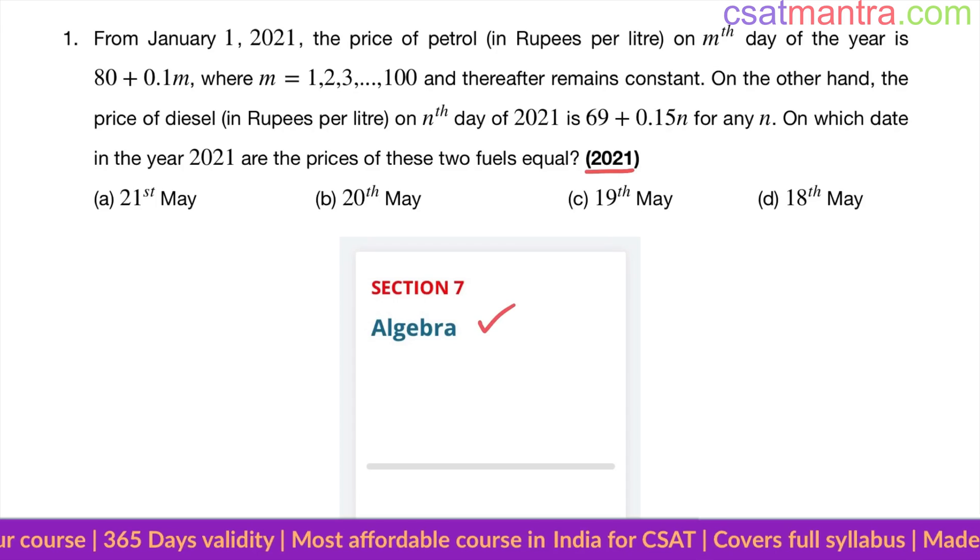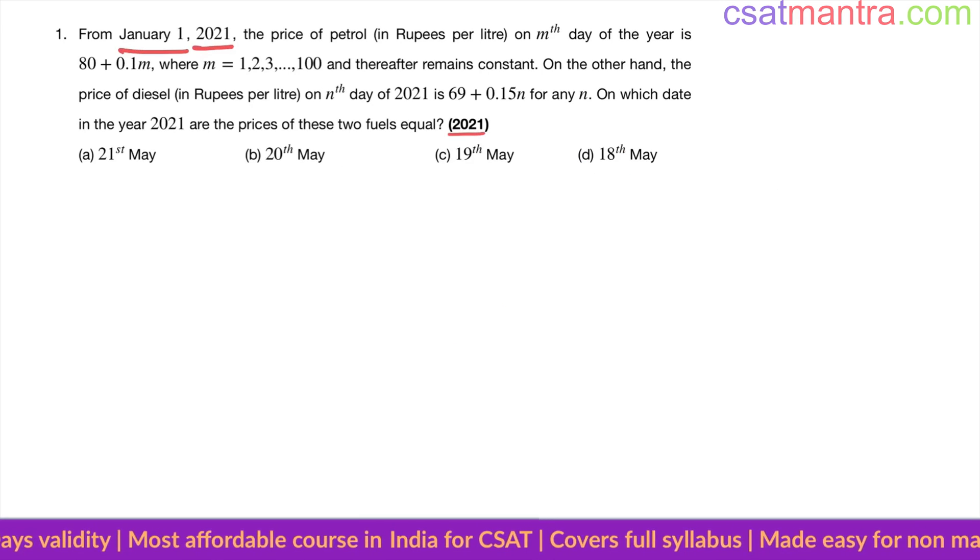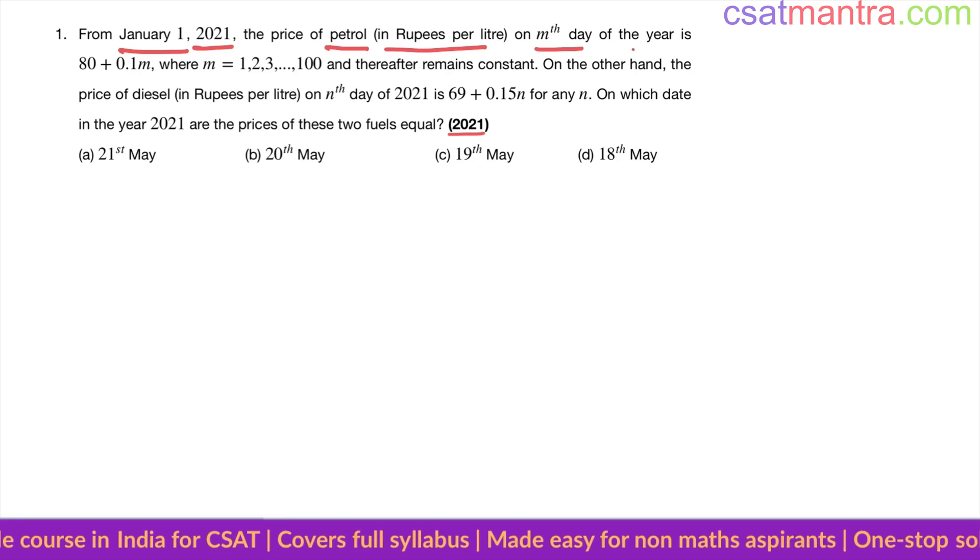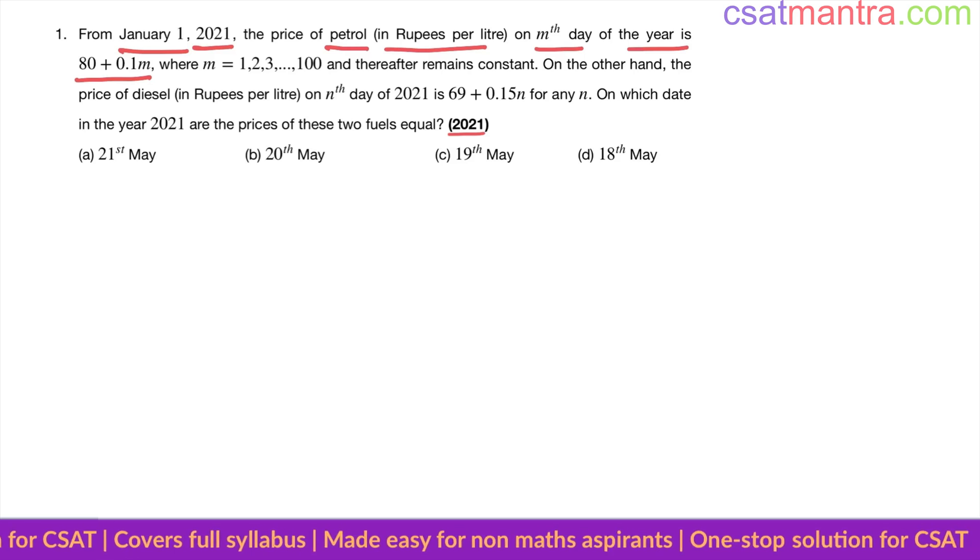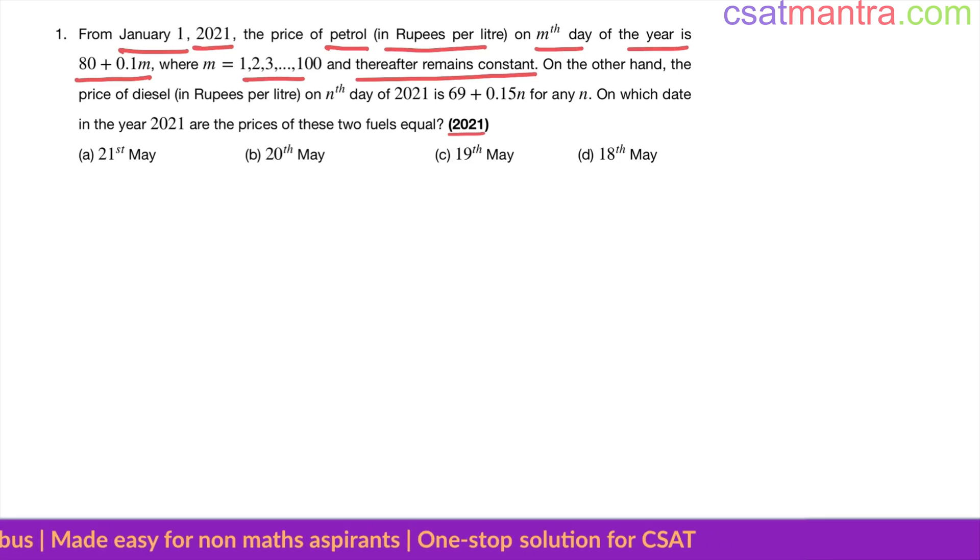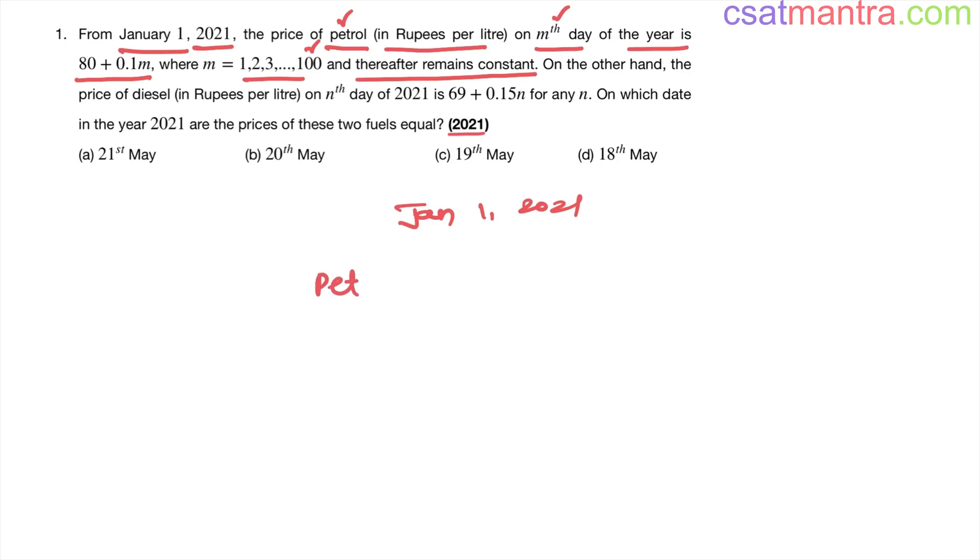From January 1, 2021, the price of petrol in rupees per liter on the mth day of the year is 80 + 0.1m, where m is 1, 2, 3 up to 100, and thereafter remains constant. After 100 days the price of petrol remains constant, where m is the mth day. So we are starting from January 1, 2021 with the price of petrol as 80 + 0.1m.